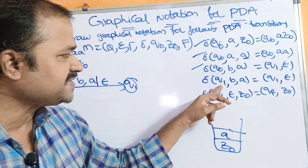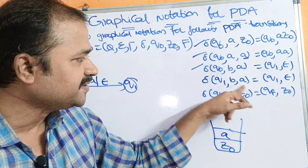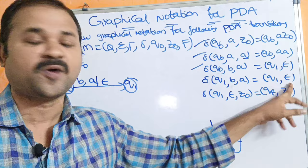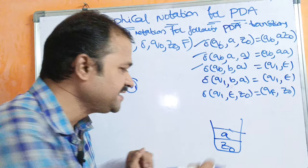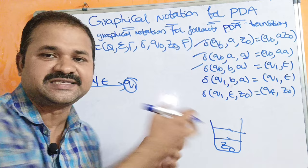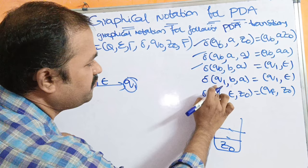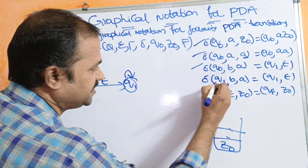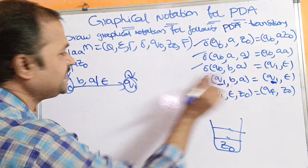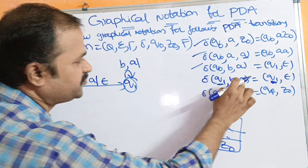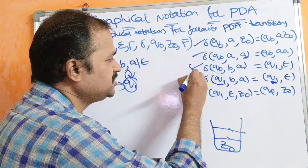For the fourth transition function: if the input symbol is B and the stack's topmost symbol is A, there is no need to change the state — we remain in Q1. But we need to perform the pop operation, so this A will be deleted from the stack. The current state is Q1 and the destination state is also Q1, making this a self-transition. B is the input symbol, A is the stack top, and it will be replaced by epsilon, indicating a pop operation.